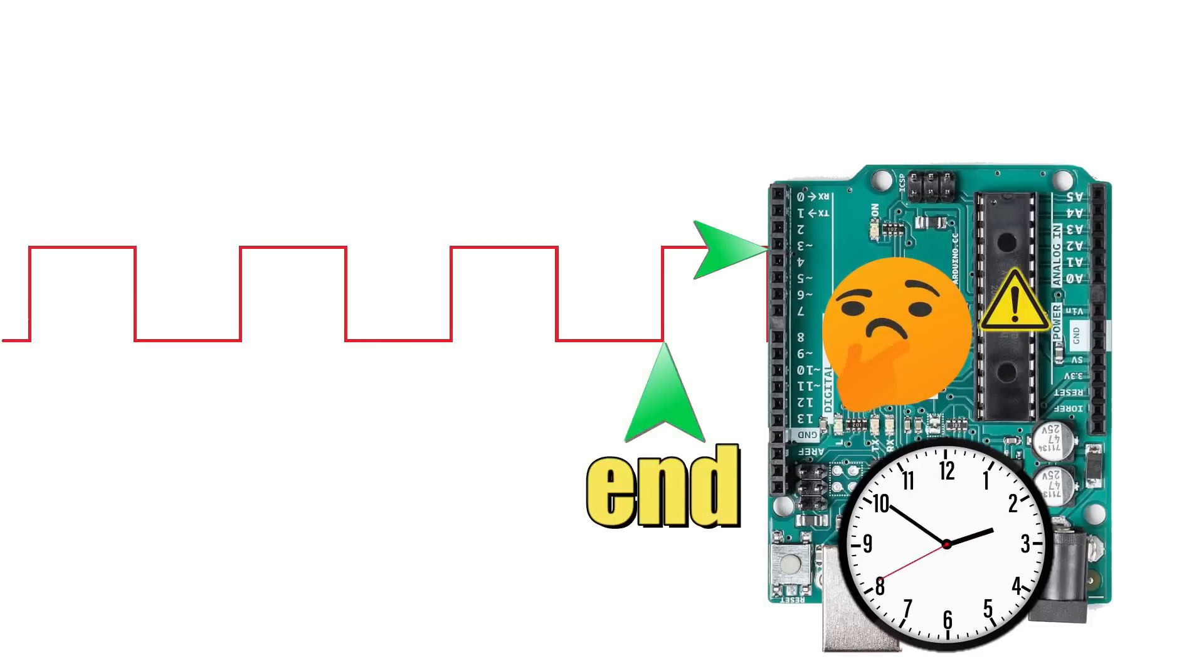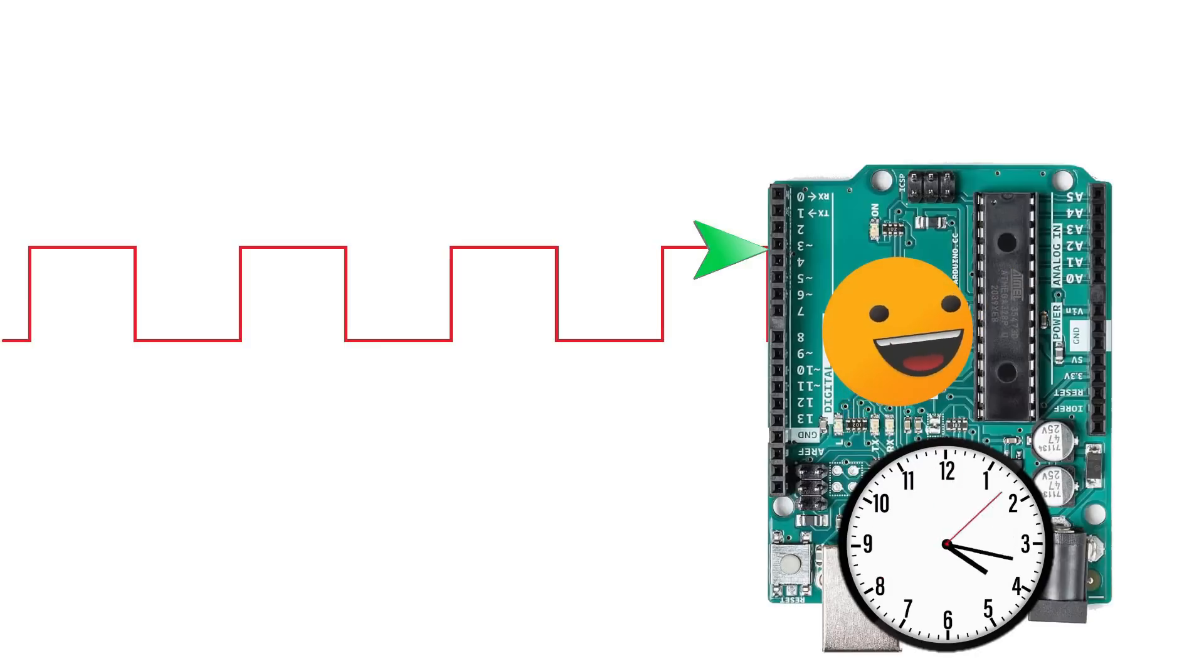And boom, the signal goes high again. And you guessed it, it triggered another interrupt request. So, the microprocessor has to stop whatever it was doing and deal with this new interrupt. And it will stop the timer and record how long the signal stayed low. The good news is, after one complete cycle, now the microprocessor has enough information to calculate the frequency. And according to the data it collected, it may say the frequency is somewhere around 100 Hz or 100 times per second. As you can see, interrupts can be very handy, despite being a rude way to get things done.